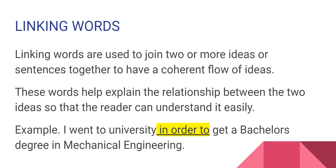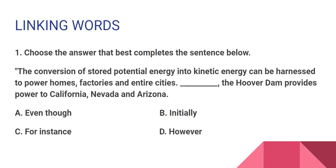For example, 'I went to university' is a complete sentence, and 'I got a bachelor's degree in mechanical engineering' is another complete sentence. In order to join these two sentences together, I can use the linking words 'in order to,' writing: 'I went to university in order to get a bachelor's degree in mechanical engineering.' Let's look at the next example — I'll give you 30 seconds to work it out.